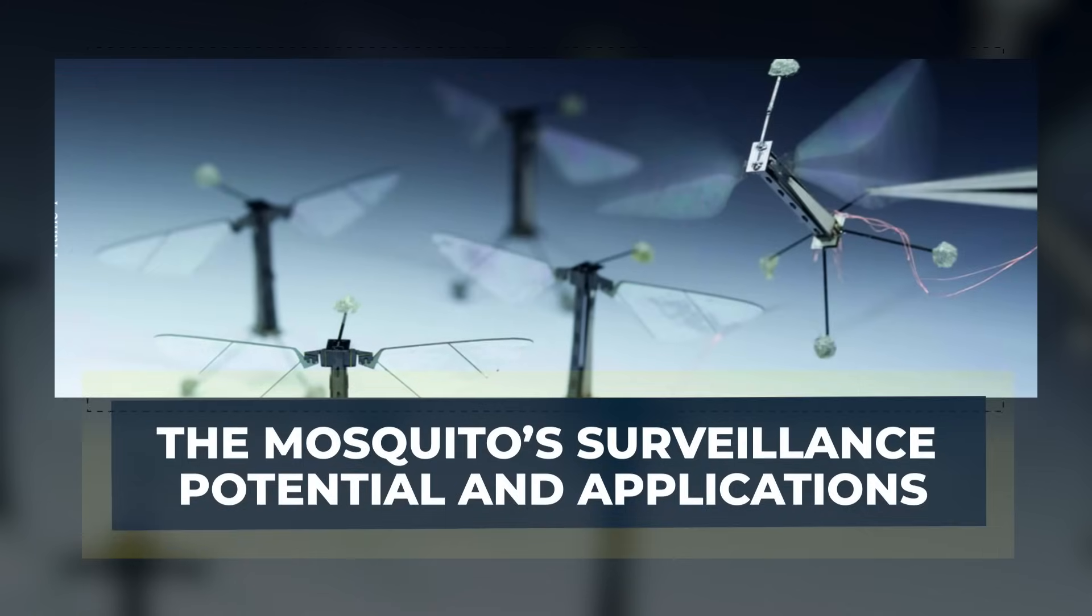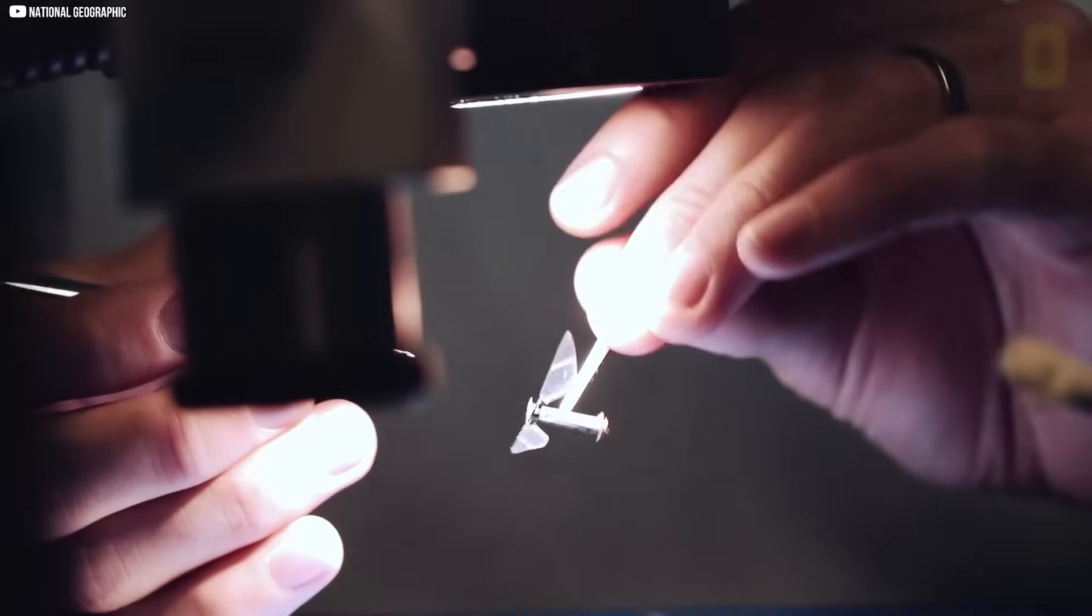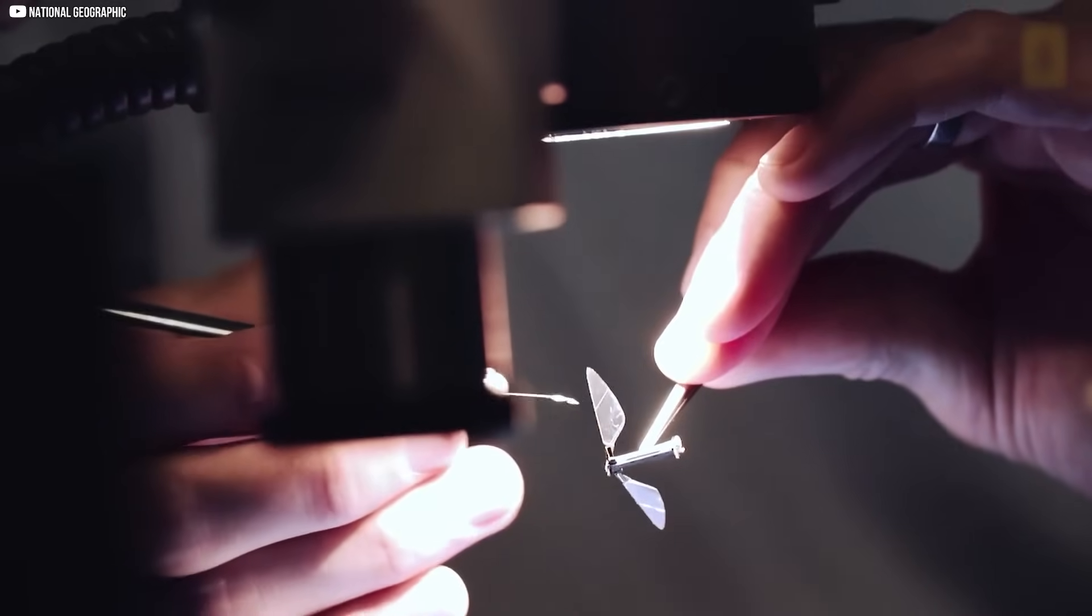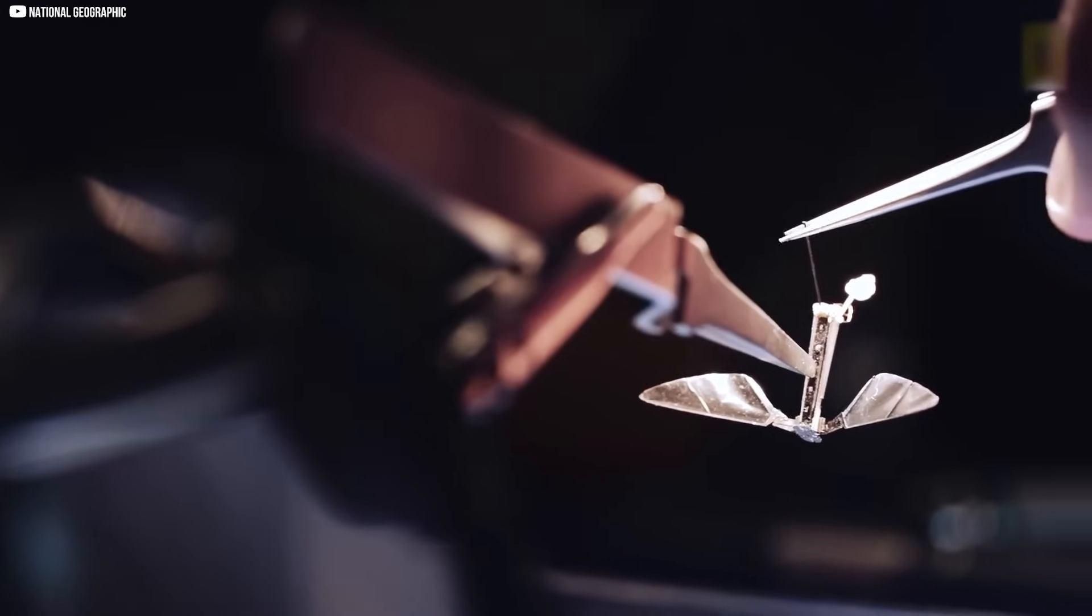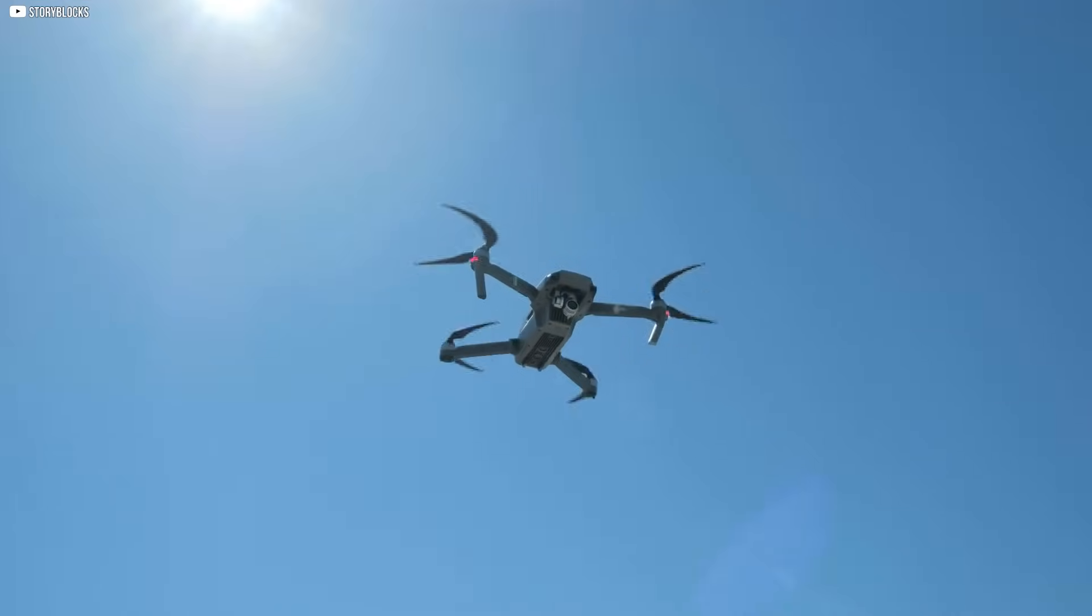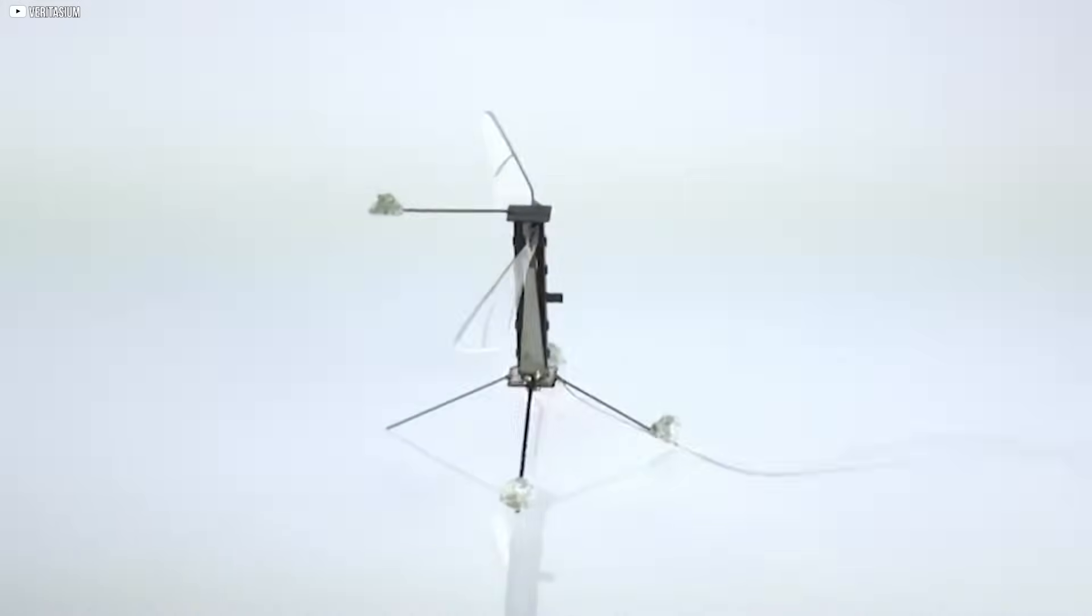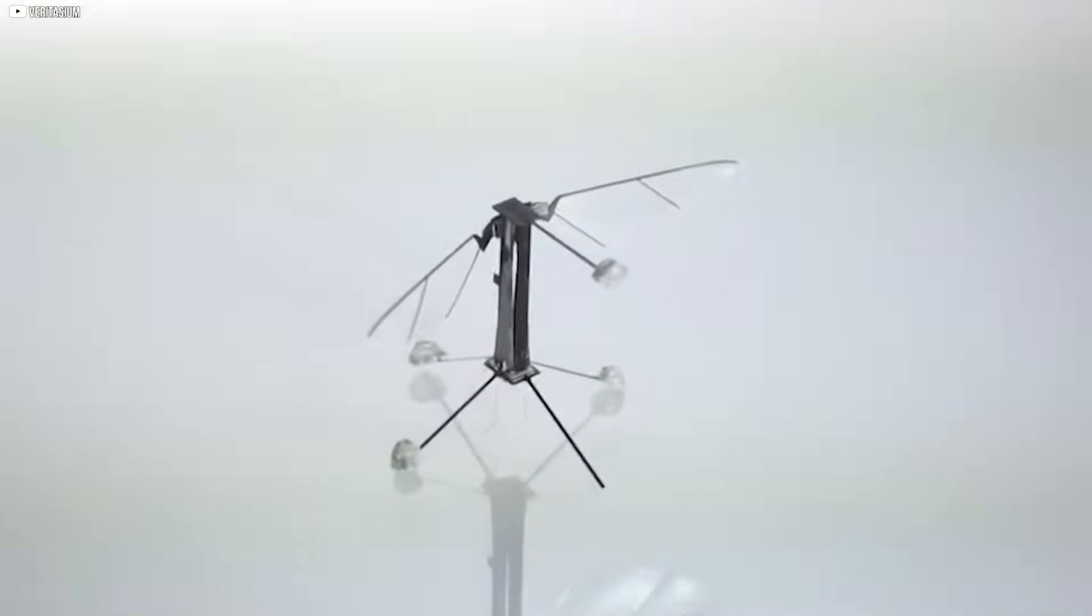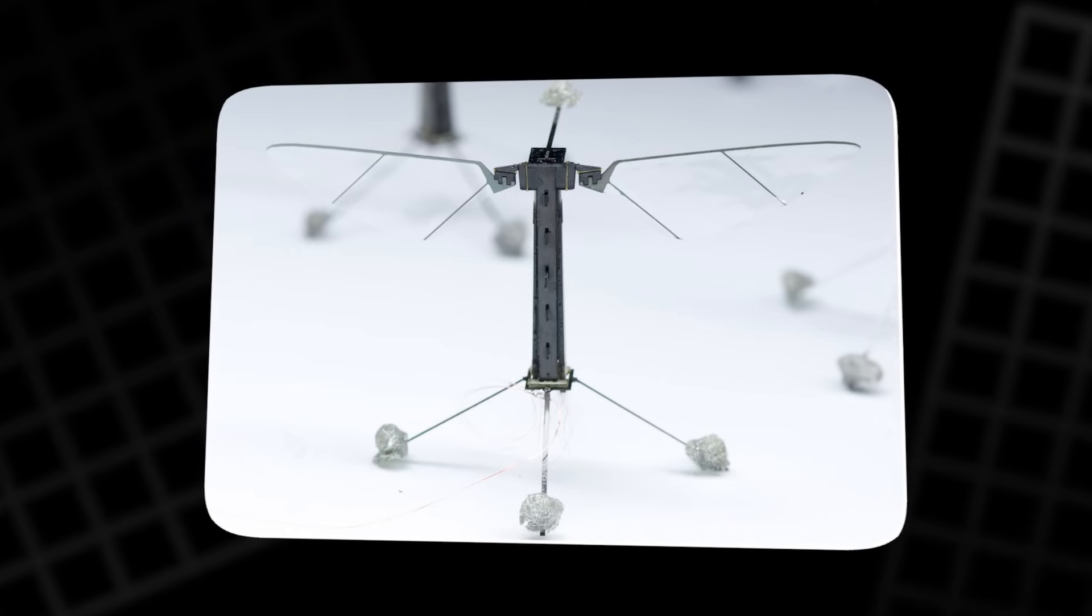The NUDT Mosquito is not just an engineering marvel, it is a game-changer in the world of surveillance. Its small size and exceptional stealth allow it to operate in environments where larger drones would be immediately detected. With its ability to perch silently and undetected, the Mosquito can gather intelligence for extended periods without raising suspicion.